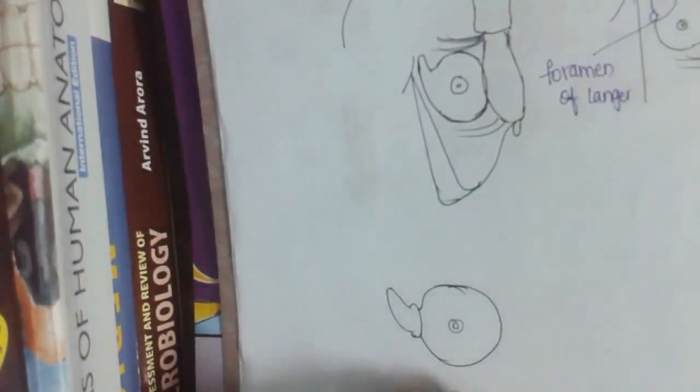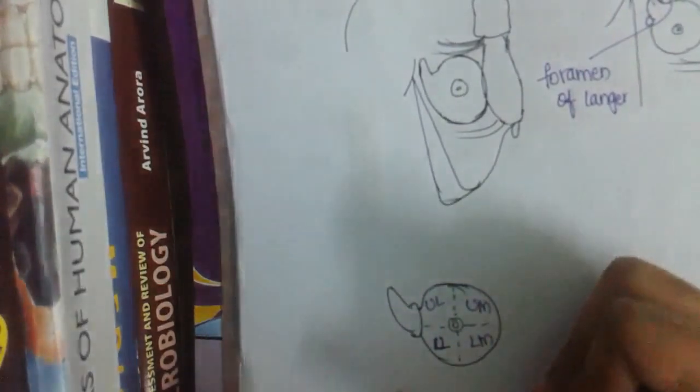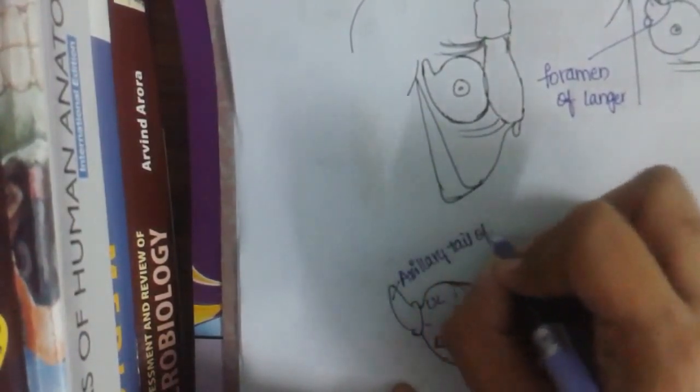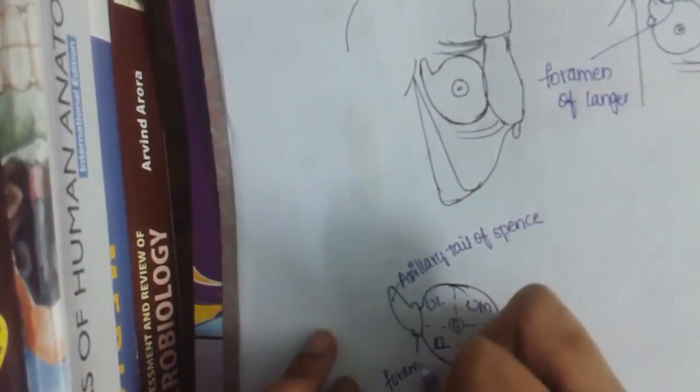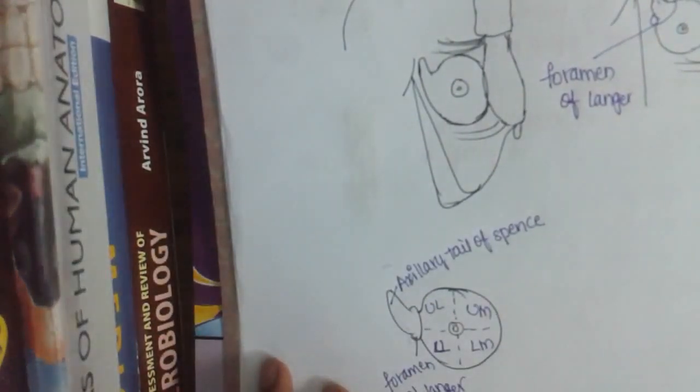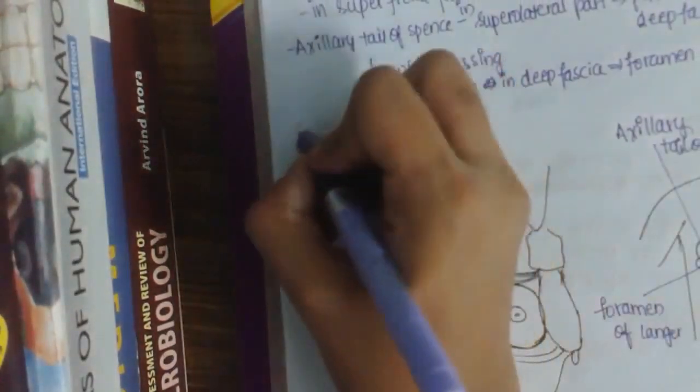The mammary gland is divided into four quadrants: upper medial, lower medial, upper lateral, and lower lateral. The axillary tail of Spence and the foramen of Langer can be seen in the diagram. The shape of the breast is hemispherical.